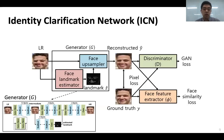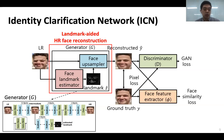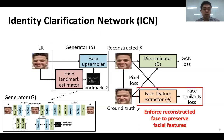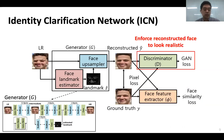To tackle this challenge, we designed a specialized network that reconstructs high-resolution faces with identity features preserved, to enhance recognition accuracy. We named it the Identity Clarification Network, or ICN. It is empowered by several state-of-the-art techniques: we utilize a face landmark estimation network to help the reconstruction process, employ a face feature extractor and face similarity loss function to preserve identity features, and utilize a discriminator-based training architecture from state-of-the-art GANs to make reconstructed faces look realistic. Please refer to our paper for more details on the ICN architecture.